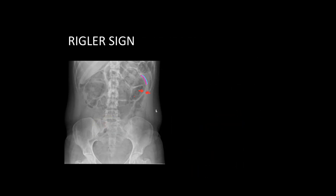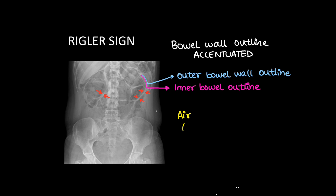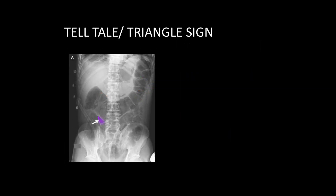Rigler sign: the bowel wall is very well visualized. We can see the inner bowel outline and the outer bowel outline also. The bowel wall outline is accentuated and this is known as Rigler sign. The concept is that there is normally air inside the lumen of the bowel, and in these cases there is also air outside the bowel due to pneumoperitoneum, hence the bowel outline is well visualized.